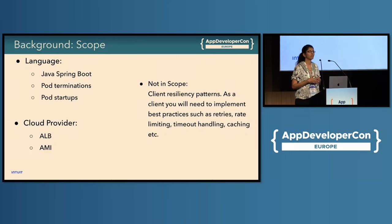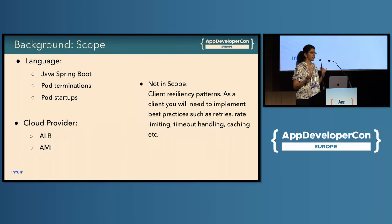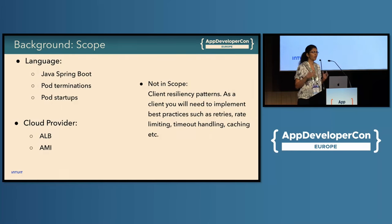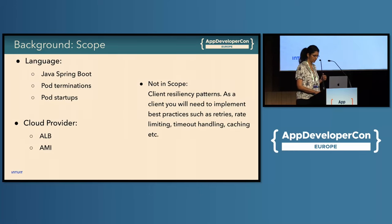What's not in scope for this talk are client resiliency patterns. We expect that clients will do the right thing and use best practices such as retries, timeouts, caching, and warming — that's a topic for another day. Today we will be focusing on server resiliency patterns: specifically, how do you protect your servers from known and unknown infrastructure changes with respect to Kubernetes?